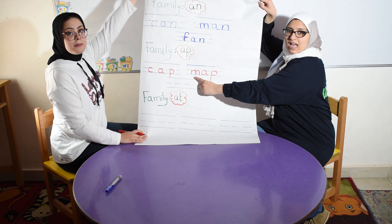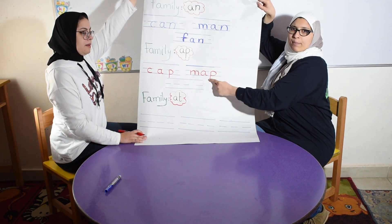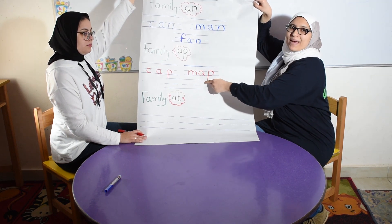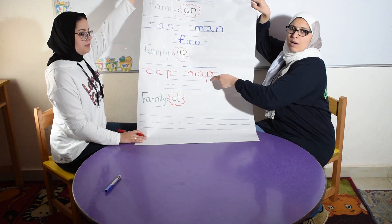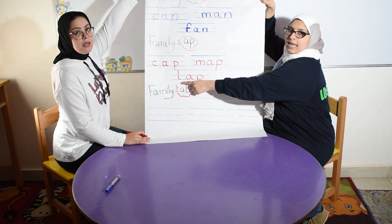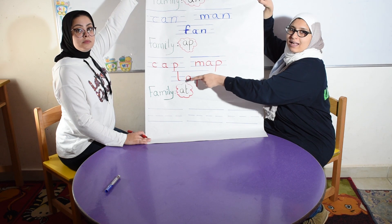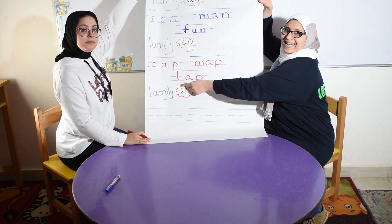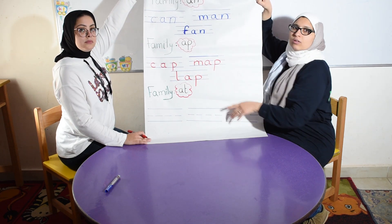We have here sound A, F. M, A, F. Map. Again? A, F, A, F. Map. The last word is L, A, F. Lap. Again please. L, A, F. Lap. The last time. Lap.